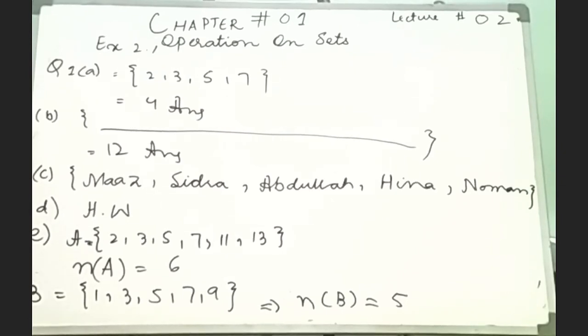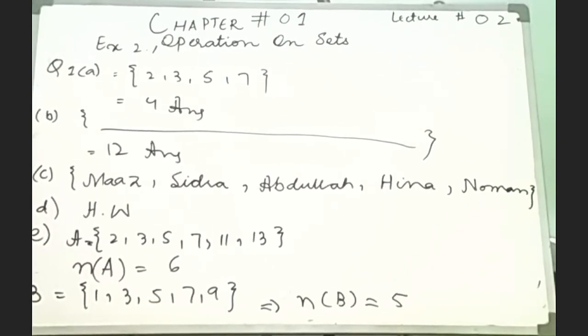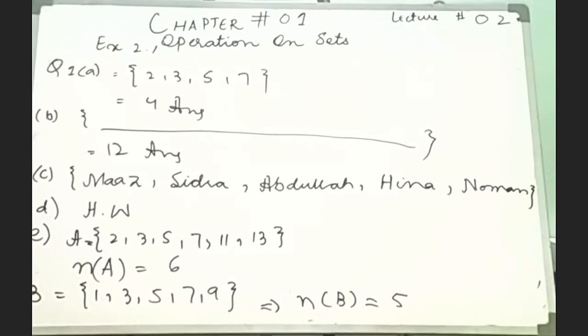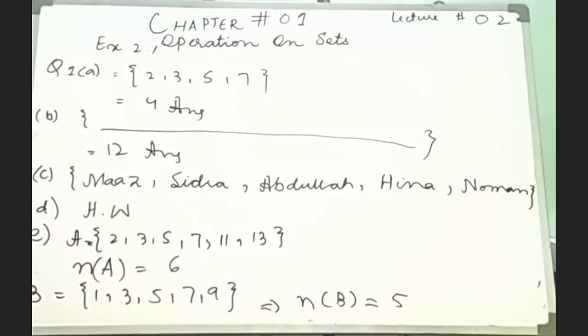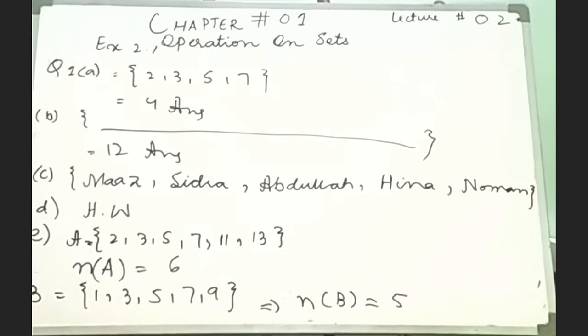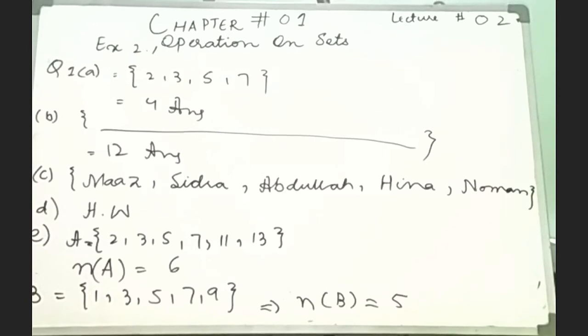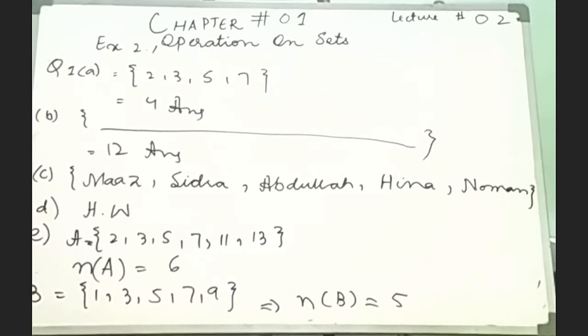Question number 3, you can do as homework. Part A is the set of plants that can walk. How can this happen? It's an empty set. Part B, the set of months with 40 days. What is that? It's an empty set. You can do all the remaining parts as homework.